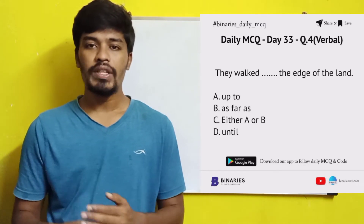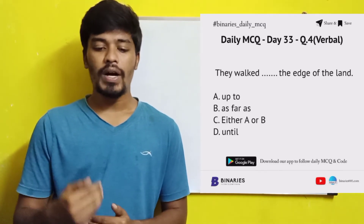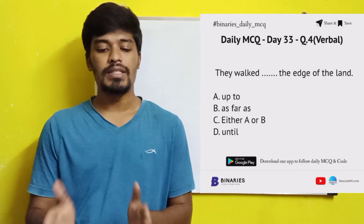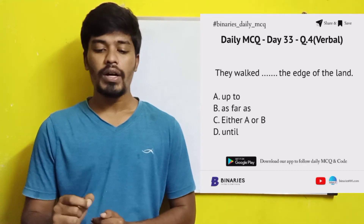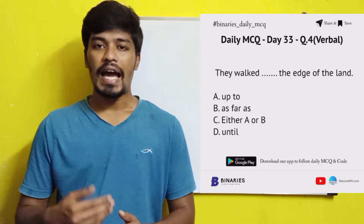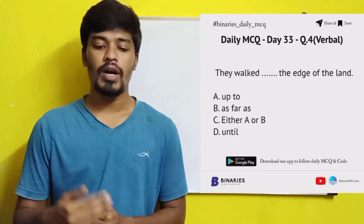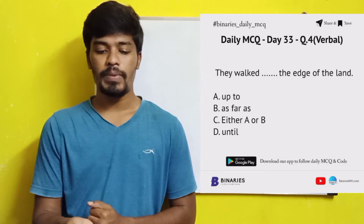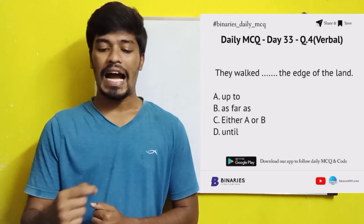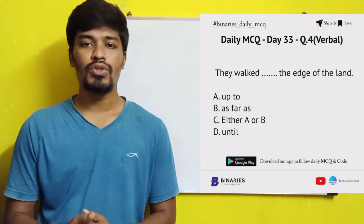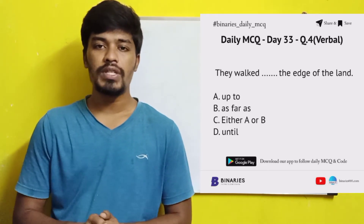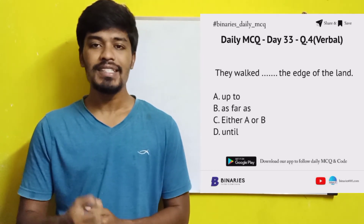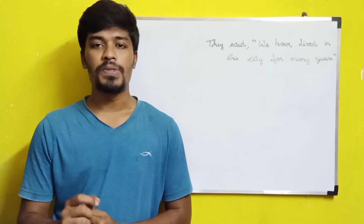Substituting the first option: "They walk up to the edge of the land" — they are covering a certain distance, so this is somewhat correct. Second option: "They walked as far as the edge of the land" — "as far as" means as long as they have walked, so this is also correct. Checking the last option: "They walk until the edge of the land" — "until" is not used for covering distance, so this is not correct. Since option A and option B are both correct, option C which says "either A or B" is the correct answer for the fourth question.